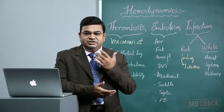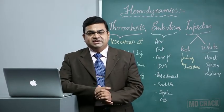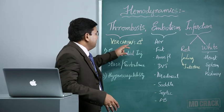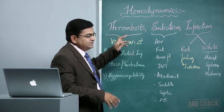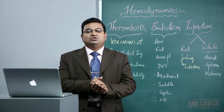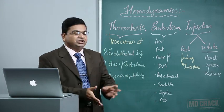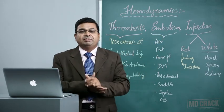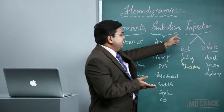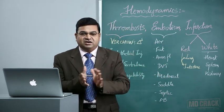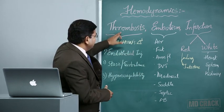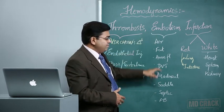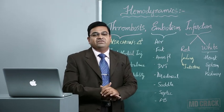Welcome to the topic of disorders of hemostasis. We have seen how normal hemostasis takes place. Let us have a look at three important topics: thrombosis, that is formation of a thrombus; embolism, where a thrombus can detach from its site of origin and become an embolus; and infarction, where the embolus obstructs blood supply to various organs, causing infarction of that organ.